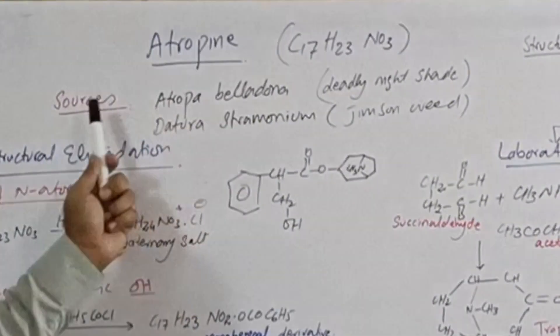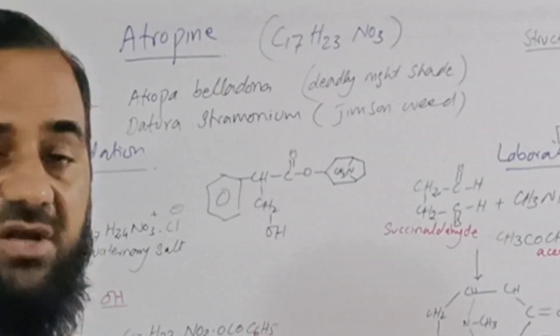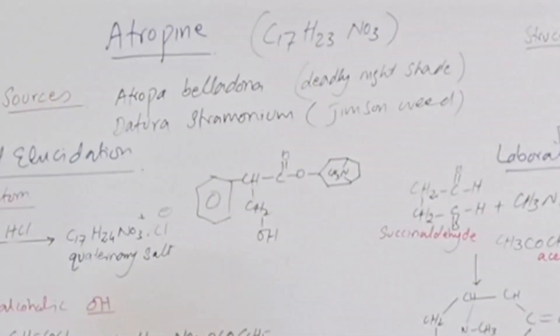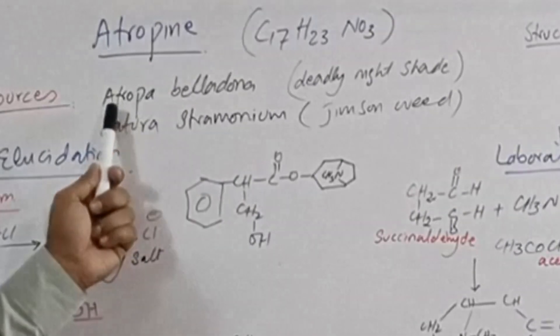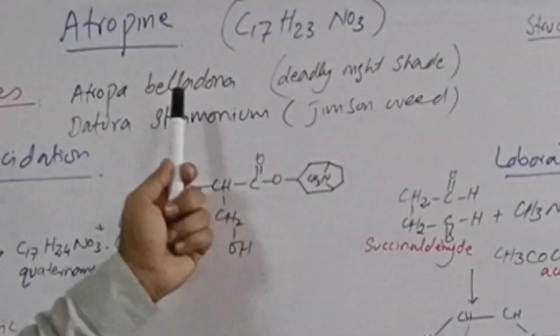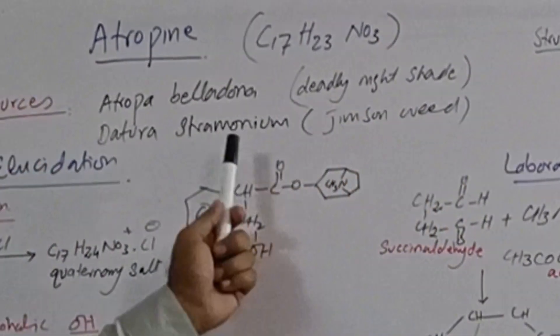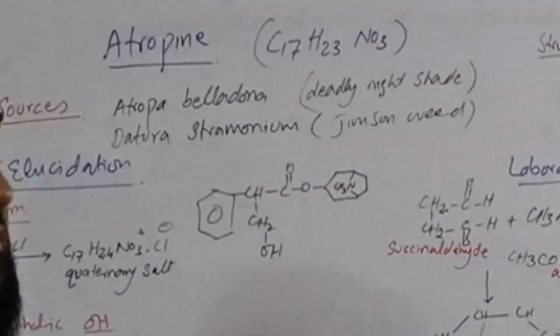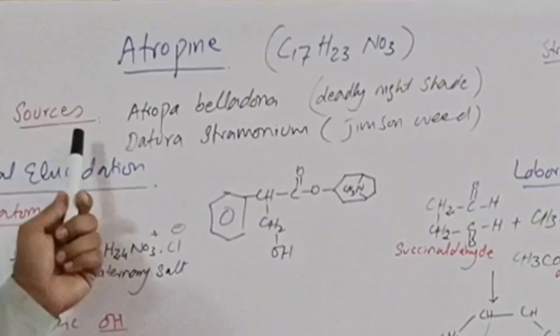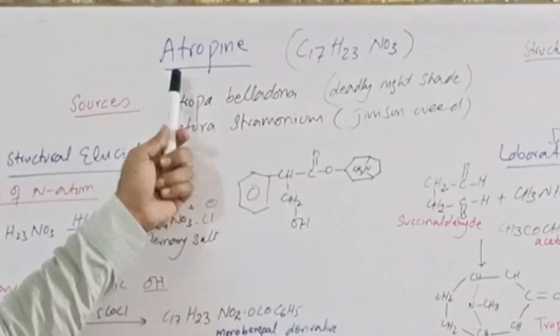First of all, the sources of atropine alkaloids are the plants of Solanaceae family. A few examples are given: Atropa belladonna, Datura stramonium. Atropa is commonly known as deadly nightshade and other with jimson weed. From these and other plants we can isolate atropine.